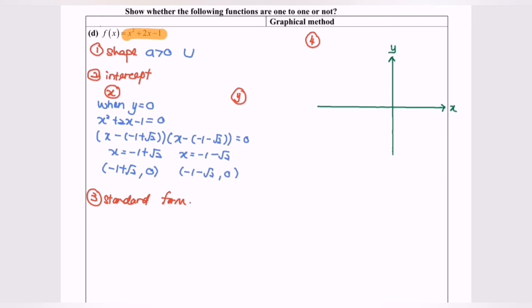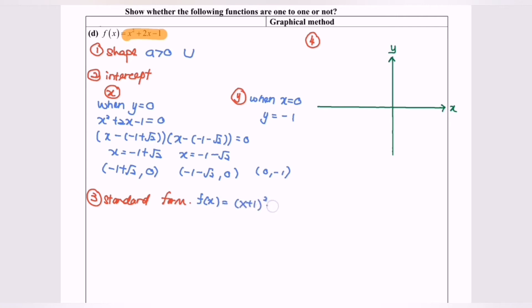Next, we find the y-intercept when x = 0. The value of y equals −1, so the coordinate is (0, −1). The third step is to find the standard form. As we already determined, f(x) = (x + 1)² − 2. From the standard form, we can obtain the minimum point and the symmetrical axis.